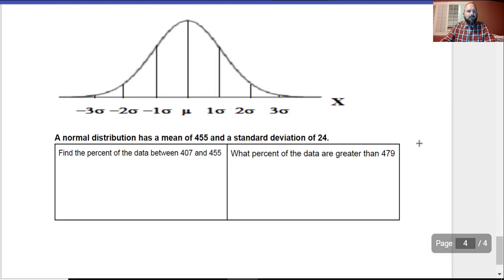Last one right here. A normal distribution has a mean of 455. We'd probably write it right here. And then if the standard deviation is 24, after we draw this out, we'd want to figure out what number does each of these got. 24 plus this would be 479. If I add another 24, that would be 503. If I add another 24, that would be 527. If I subtract by 24, I would get 431. If I subtract by another 24, I would get 407. And if I subtract by another 24, that would be 383.